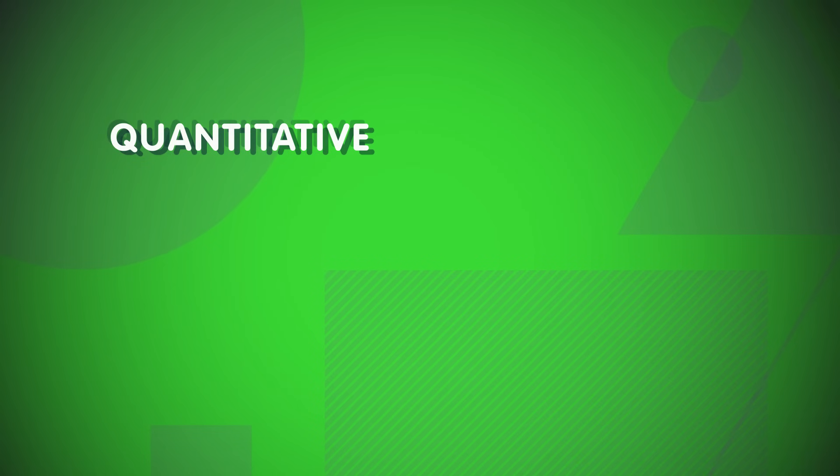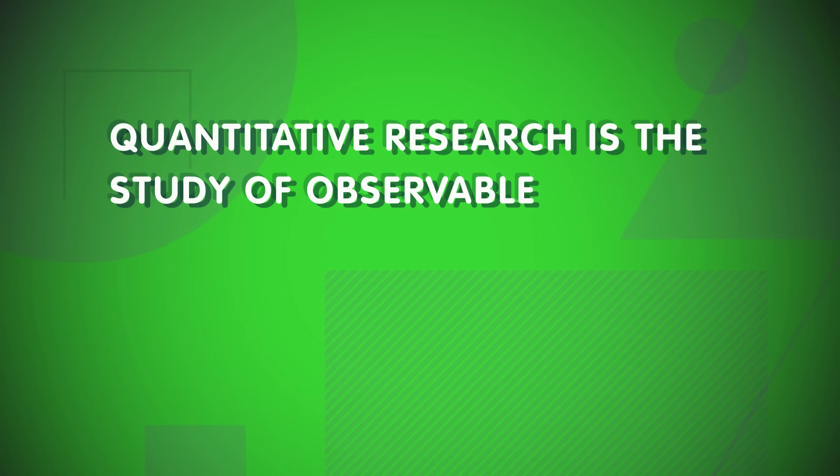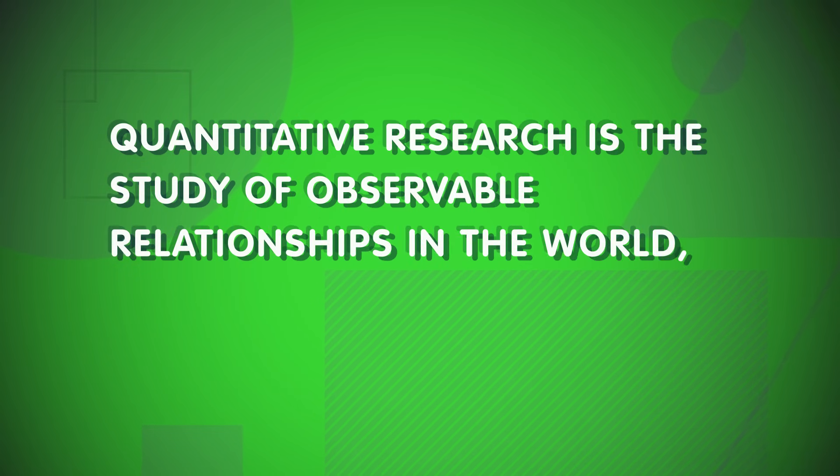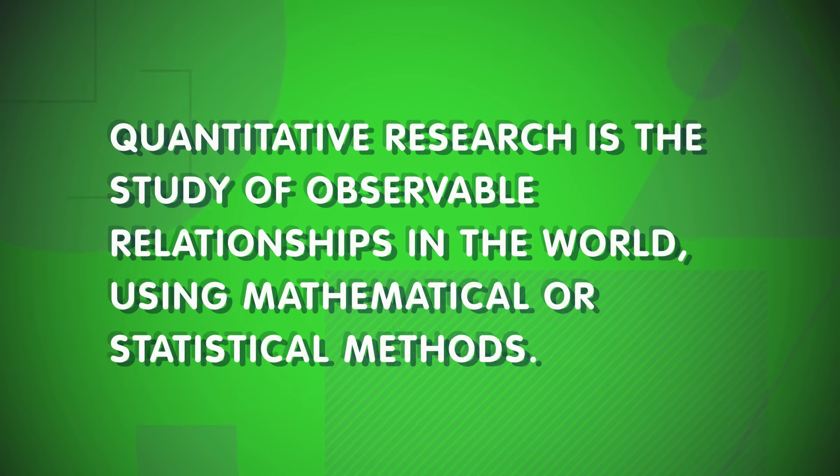As scientific researchers, sociologists must set aside their own values and beliefs to approach their work as neutral observers, and use empirical evidence to answer questions about how the social world works. So, what kind of evidence are you looking for? If you're doing quantitative research, you want data. Quantitative research is the study of observable relationships in the world, using mathematical or statistical methods.